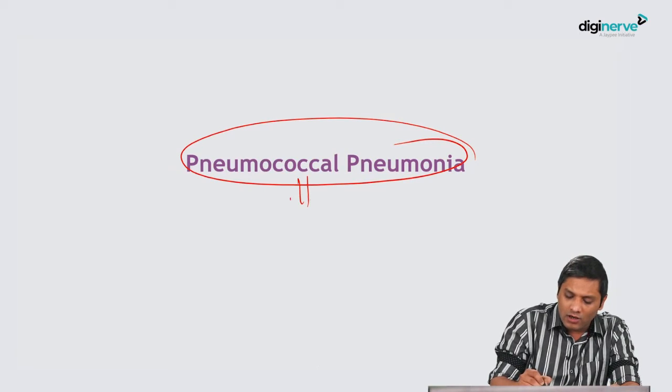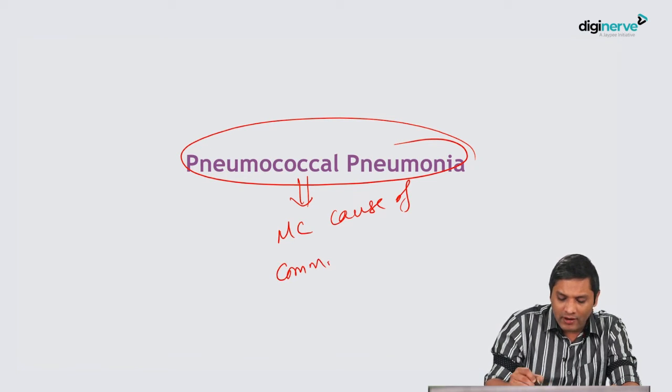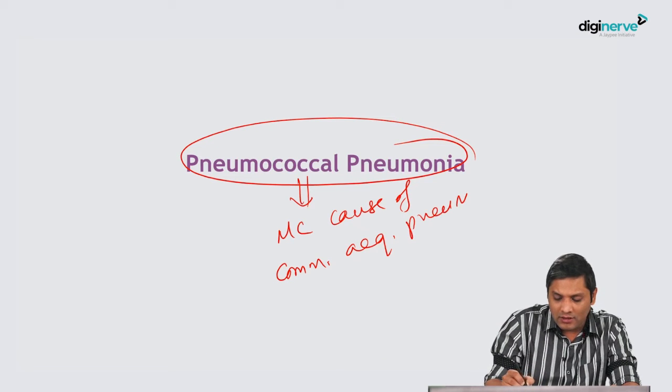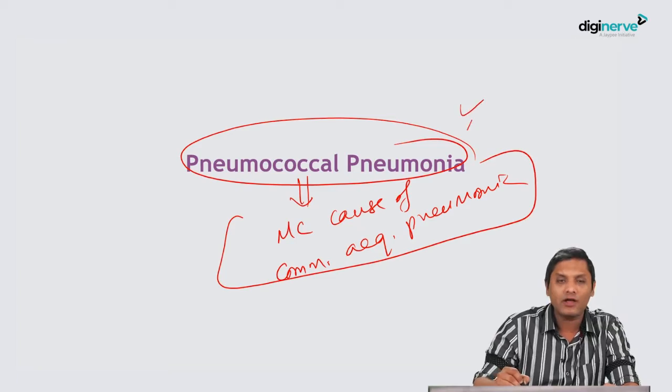Pneumococcal pneumonia is considered the most common cause of community-acquired pneumonia. Remember, it is the most common cause of community-acquired pneumonia, so you have to understand the topic in detail because it is a very important topic in the exam.